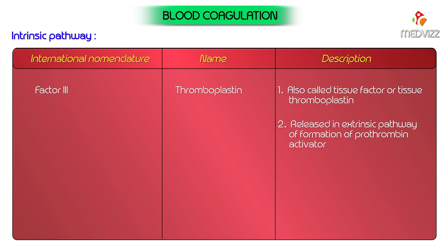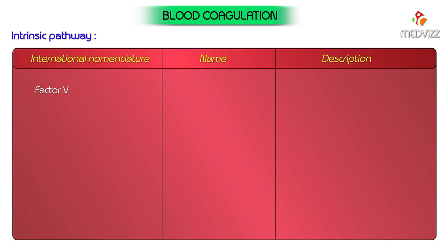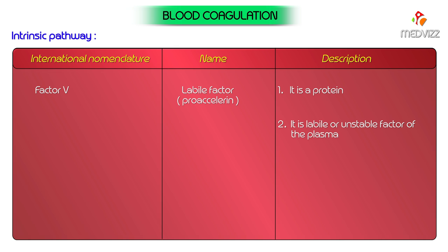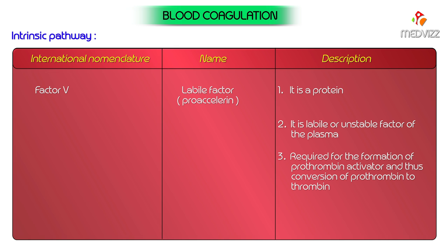Factor 5, labile factor (also known as pro-accelerin): it is a protein, and as the name indicates, it is a labile or unstable factor of the plasma. It is required for the formation of prothrombin activator and thus conversion of prothrombin to thrombin in both extrinsic as well as intrinsic mechanisms of blood coagulation. Factor 5 is consumed during clotting and is therefore absent from the serum.